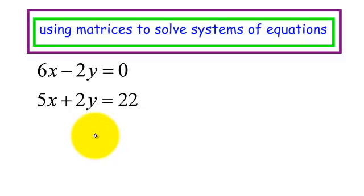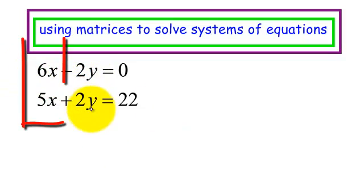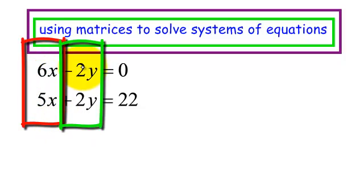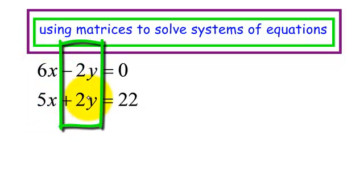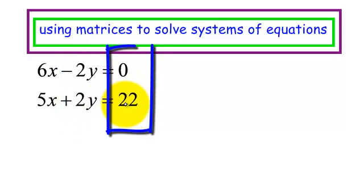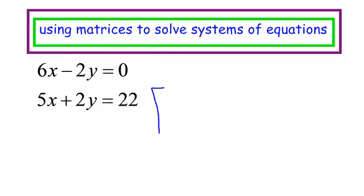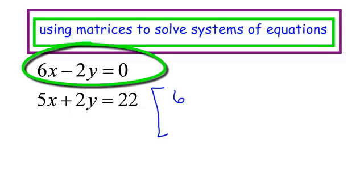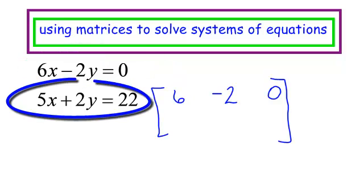I need to write this as a matrix. Make sure the x and the y are lined up. You see I have my x's first, so that will be my first column. I have my y's, then my constants. Make sure the variables are on the left and the constants are on the right. Written as a matrix, it would be 6, negative 2, 0, and then the coefficients of the variables in the second equation: 5, 2, and my constant is 22.